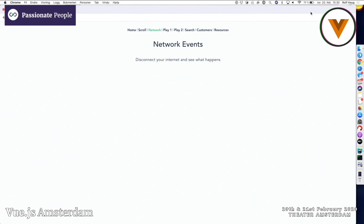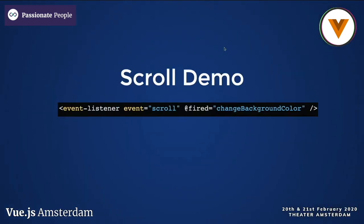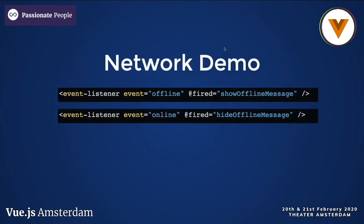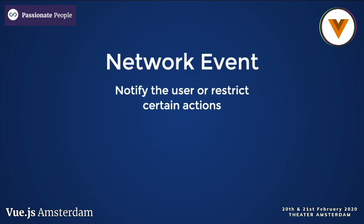And it disappears. The cool thing is that to make the last example, we listen for an offline event or an online event, and then we trigger our method — either show the offline message or hide it. These events are native, so the browser natively lets our application know if we lose the connection. This is great for notifying the user or restricting certain actions if you rely on autosaving, like many applications do — for example, Dropbox Paper on a train.